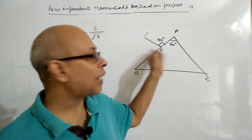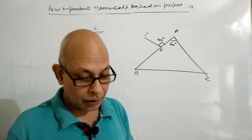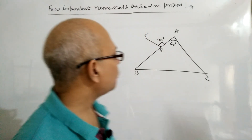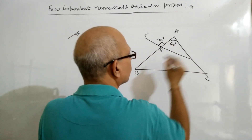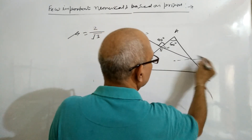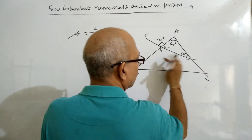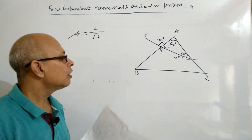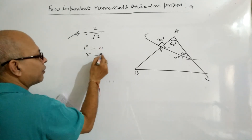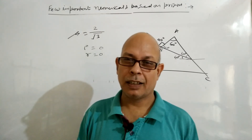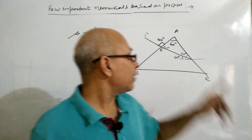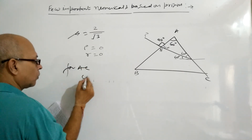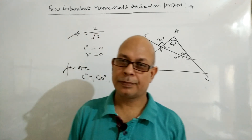We need to find three things: the path, the angle of emergence, and the angle of deviation. The prism angles work out as: 90°, 60°, 30°. Since the ray is incident normally, the angle of incidence at AB is 0°, so the angle of refraction R is also 0°. The angle of incidence at the next surface becomes 60°.